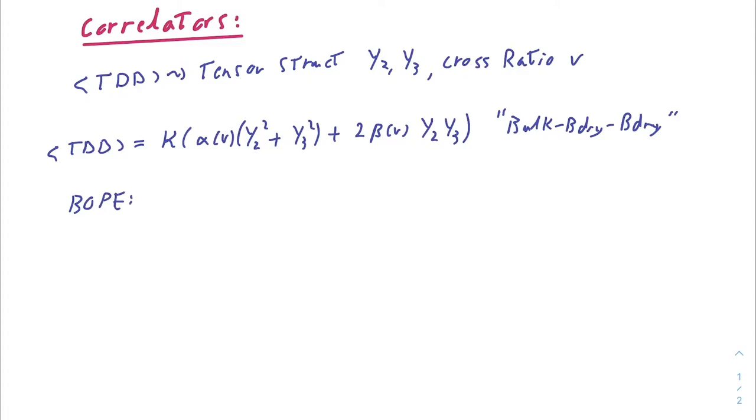Owing to the existence of a convergent boundary operator expansion, the stress tensor can be expanded as the sum of operators localized on the boundary. The first of which is the displacement operator, followed by a tower of spin 2 operators.